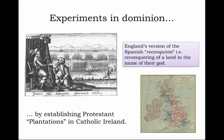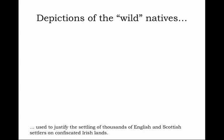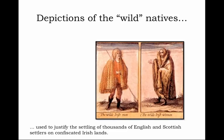Seeing the Irish as suitable subjects for English conquest, throughout English culture at the time it was easy to find condescending, insulting depictions of the Irish as 'the wild Irish' — the natives of the island. These images were used to justify the settling of thousands of English and Scottish settlers on confiscated Irish lands. Here you see an English depiction of the wild Irish man next to the wild Irish woman, wearing what appears to be some sort of animal skin coat — images that in the minds of the English marked her as inferior, wild, backwards, uncivilized.